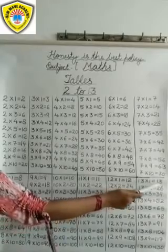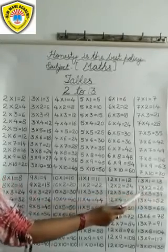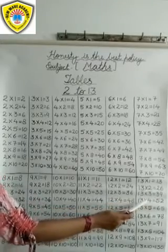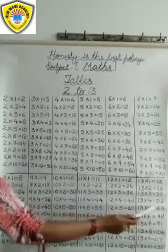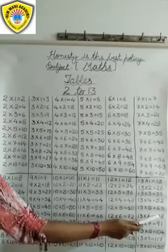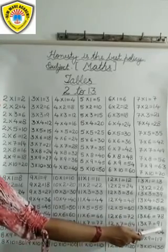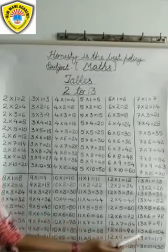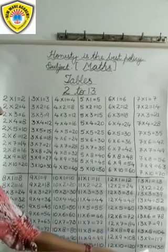13 1s are 13. 13 2s are 26. 13 3s are 39. 13 4s are 52. 13 5s are 65. 13 6s are 78. 13 7s are 91. 13 8s are 104. 13 9s are 117. 13 10s are 130.